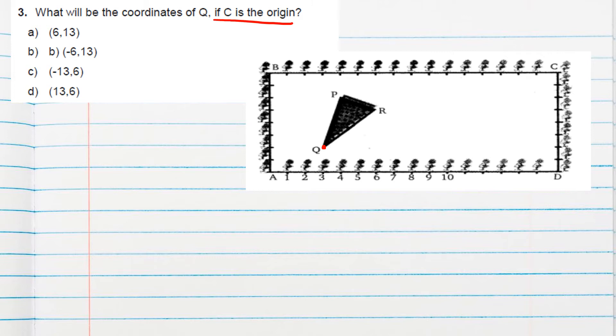So again what we will do? Perpendicular distance on, means perpendicular on y-axis, perpendicular on x-axis. So count this one here. 1, 2, 3, 4, 5, 6, 7, 8, 9, 10, 11, 12, 13. And this will be 1, 2, 3, 4, 5, 6. So 13 comma 6 is the answer.